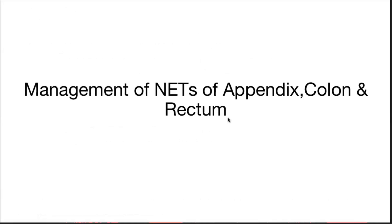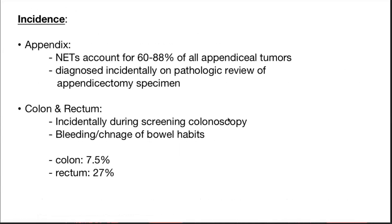Coming to neuroendocrine tumors of the appendix, colon, and rectum — approximately 80% of appendix NETs are diagnosed incidentally on pathologic review of appendicectomy specimens. In colon and rectum, they are found incidentally during screening colonoscopy, or rarely they can present as change in bowel habits or bleeding PR. Rectal NETs are more common than colonic NETs and are non-functional.